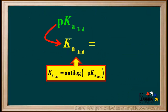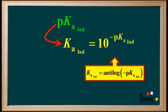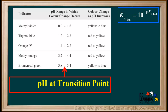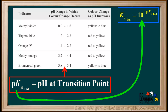To find the Ka of an indicator when we know the pKa, just like the hydronium ion concentration is the antilog of negative pH, we can say that Ka is equal to the antilog of negative pKa, which is 10 to the negative pKa. We can use the indicator table to find the pKa and Ka of any indicator. The midpoint of the pH range in which the color change occurs is the pH at the transition point, and we know that the pH at the transition point is the pKa. We also know that the Ka is 10 to the negative pKa.